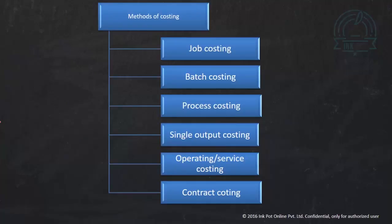Now, what are the methods of costing? First is job costing. Job costing is when work is given in orders. For example, in a printing press, the total cost depends upon the requirement of the customer — the quality, size, and design of the visiting card. Cost may vary if a customer wants a cheaper or better quality card. So when we calculate the cost of each order, it is known as job costing.